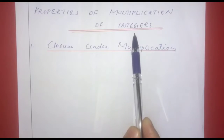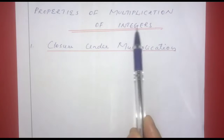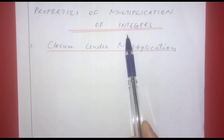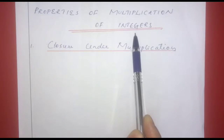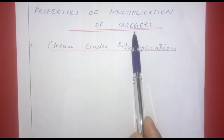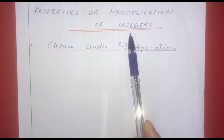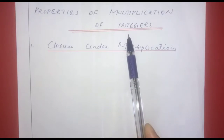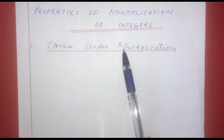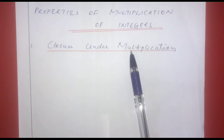This is the properties of multiplication of integers. We have addition and subtraction properties. Next, we have to look at the properties of multiplication.